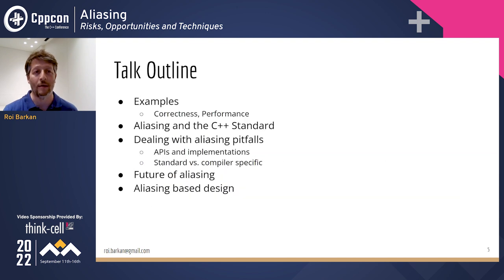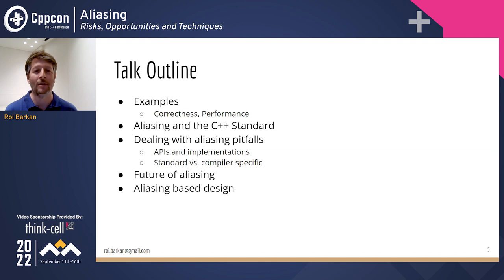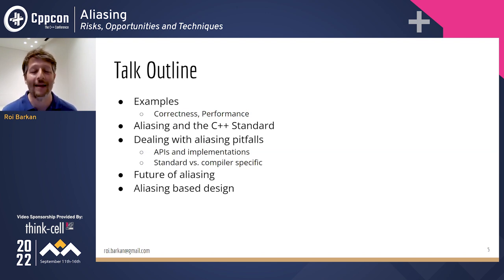Thinking about aliasing can impact both how we write our code to be correct, and also have some impact on efficiency and speed. The vast majority of this talk will be made up of examples where aliasing can bite us and affect correctness or performance. I'll also talk about how aliasing relates to the C++ standard, give guidance on how to deal with pitfalls, and discuss what the future holds.